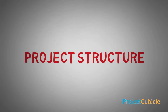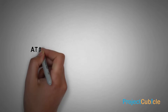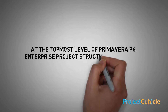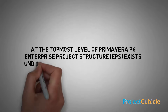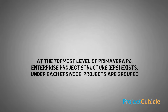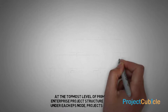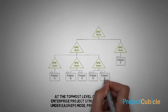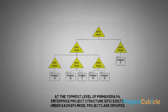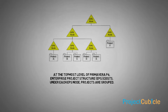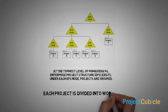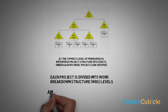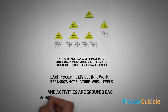Project Structure. At the topmost level of Primavera P6, the Enterprise Project Structure exists. Under each Enterprise Project Structure node, projects are grouped. Each project is divided into Work Breakdown Structure levels, and activities are grouped under each Work Breakdown Structure level.